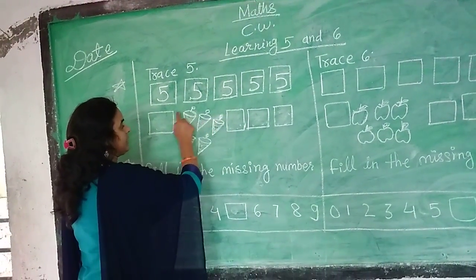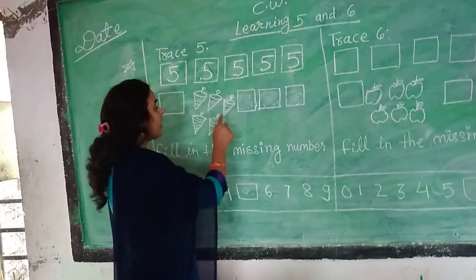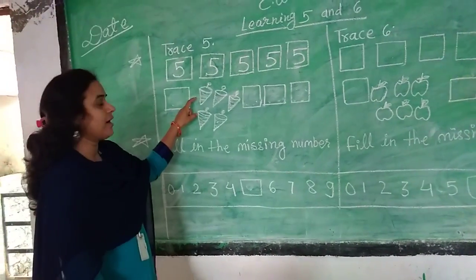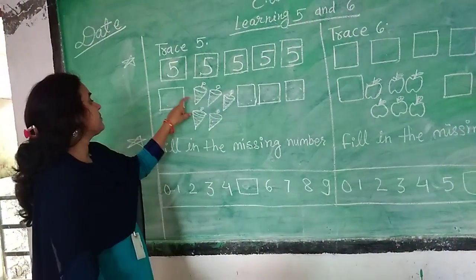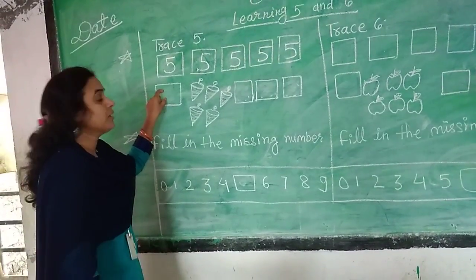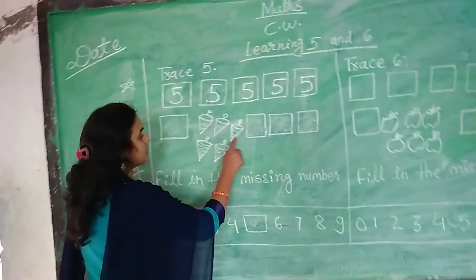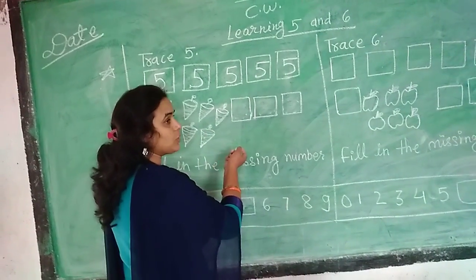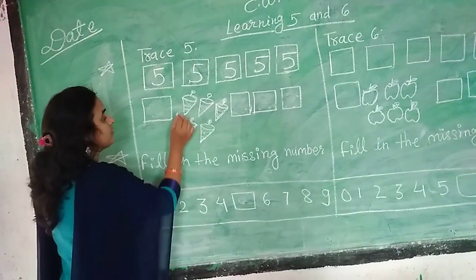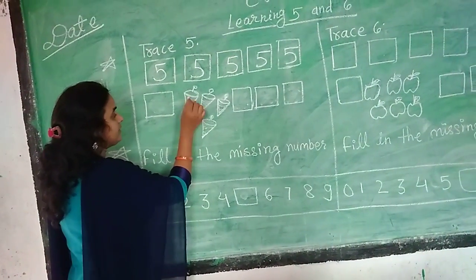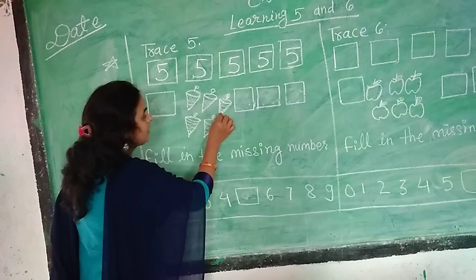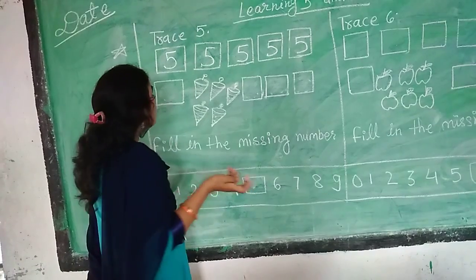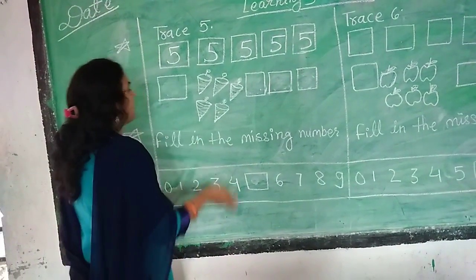What is this? Top. Now, how many tops in this picture? Let's count: 1, 2, 3, 4, 5. Okay? How many? 5. Okay?